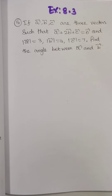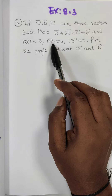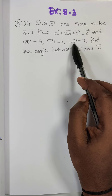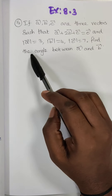Hi students, this is Dinesh here. Today we are going to discuss exercise 8.3, question number 5. If A vector, B vector, C vector are 3 vectors such that A vector plus 2B vector plus C vector is equal to 0 vector, and modulus of A vector is equal to 3, modulus of B vector equal to 4, modulus of C vector is equal to 7. Find the angle between A vector and B vector.